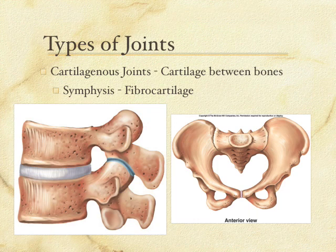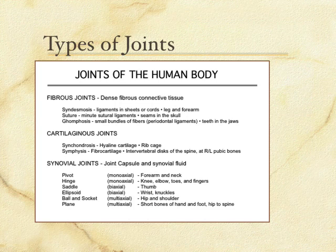So those are all of our cartilaginous and fibrous joints. In the handout we've described examples of each one and given you locations where you could find them. Make sure you know those.